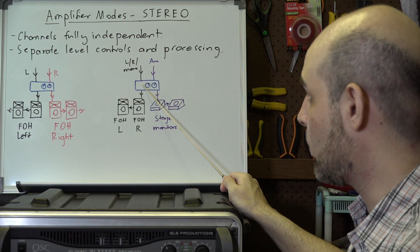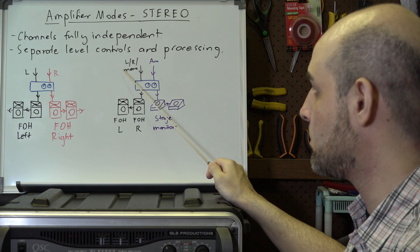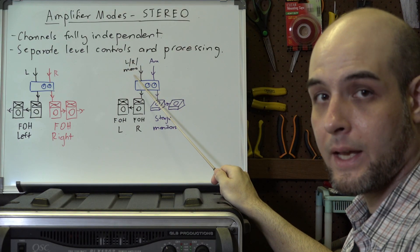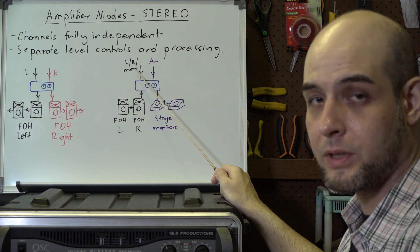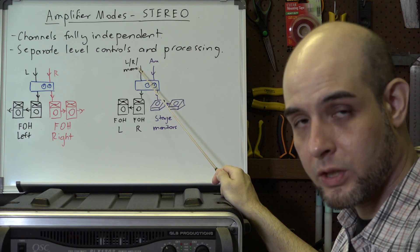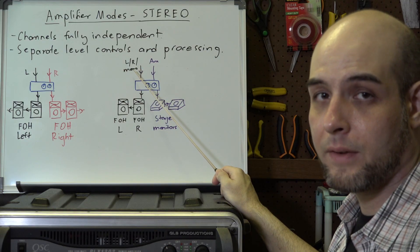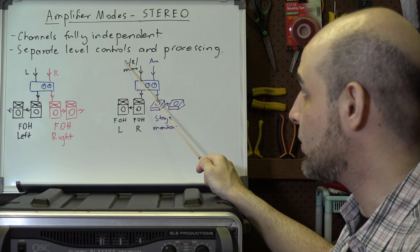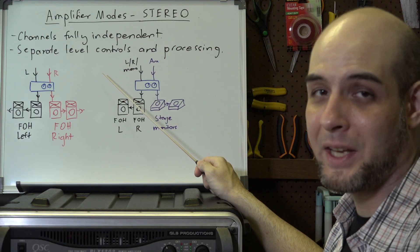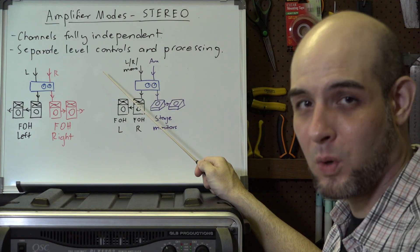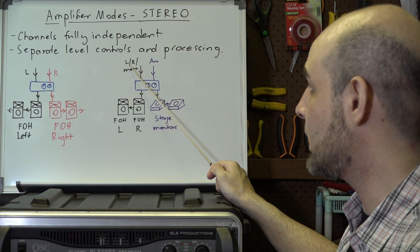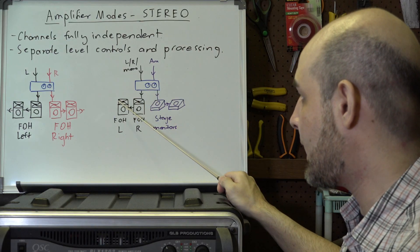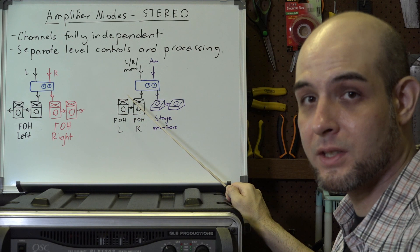Coming into channel one you would have a mono signal — either your left, right, or a mono sum of the two. If you're using a stereo mixer in this way, you have to leave all your pan controls at 12 o'clock, because if you pan material to the right it won't appear in your front of house feed.